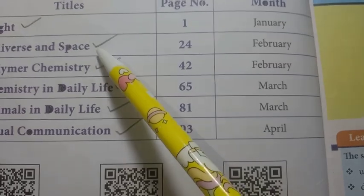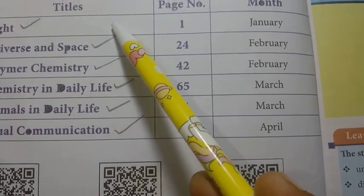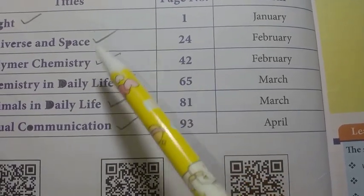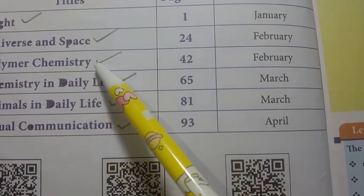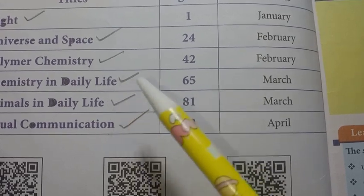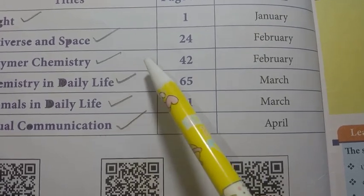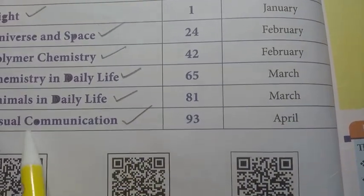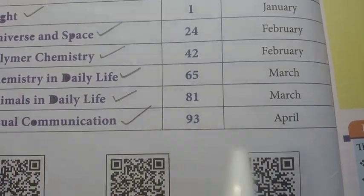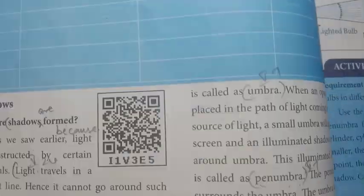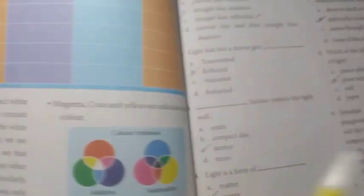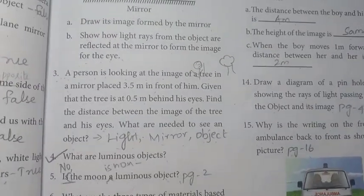The topics covered are: Light, Universe and Space — which is the physics part — then Polymer Chemistry and Chemistry in Daily Life — the chemistry part — and Animals in Daily Life. All the questions and answers from previous year question papers are important, so all revisions are important.